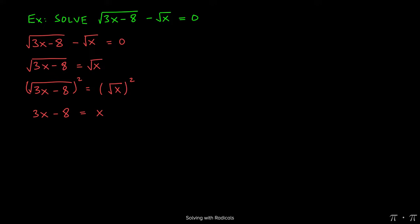This should be a fairly simple equation to solve. We start by subtracting the x and adding the 8 over to the other sides. 3x minus x gives us 2x. The 8 comes along.